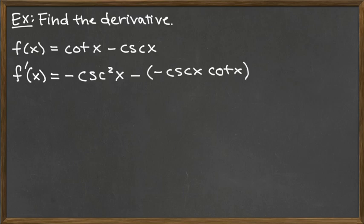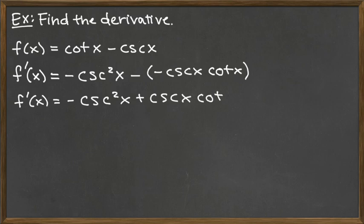To clean this up, the minus and negative become a plus sign. So we have negative cosecant squared x minus negative, which becomes plus cosecant of x times cotangent of x, as our derivative answer.